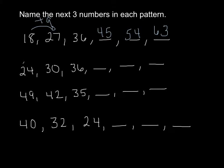24 to 30 is plus 6. So 24, 30, 36, 42, 48, 54.